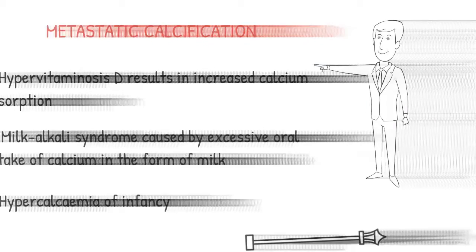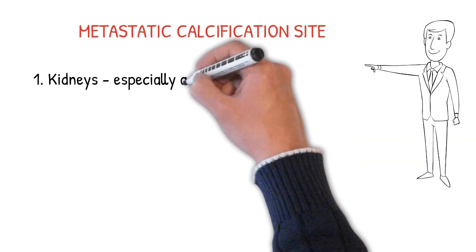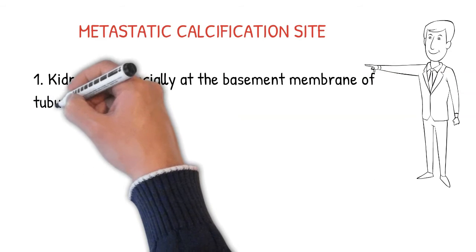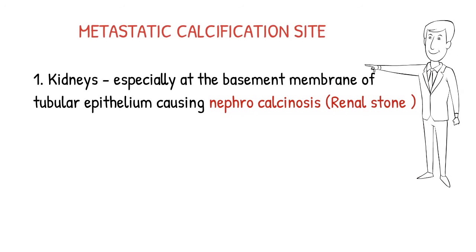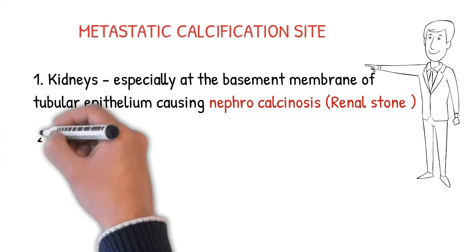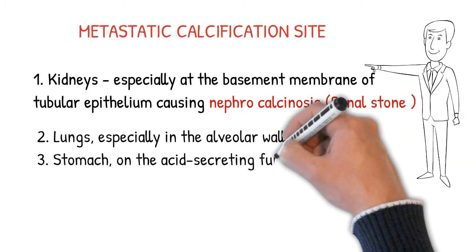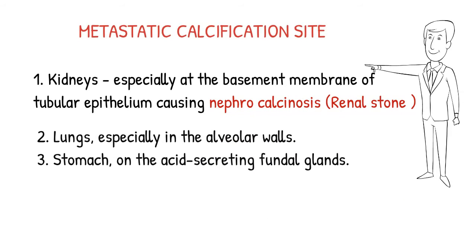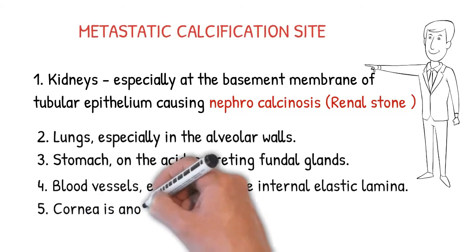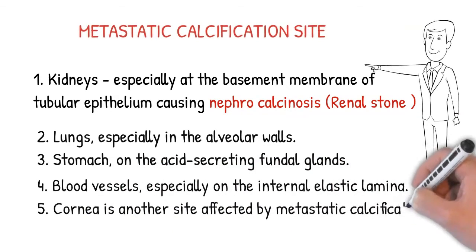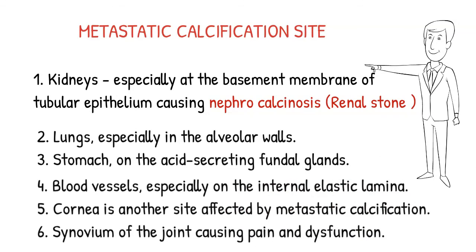In all these conditions calcium increases in the blood. The favorite sites for calcium deposition are: the kidney — producing renal stones and nephrocalcinosis with deposits in the renal pelvis; the lungs (alveoli); the stomach, especially acid-secreting glands; blood vessels — reducing elasticity of the tunica intima; the cornea; and joint cavities and synovium.